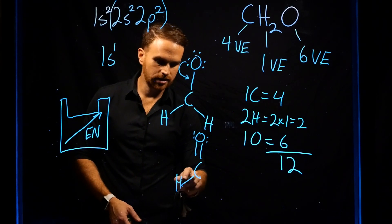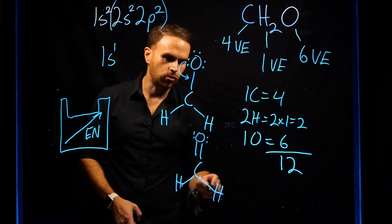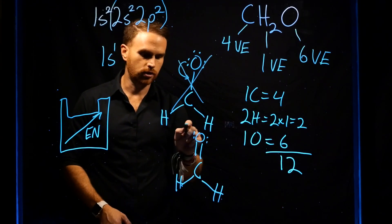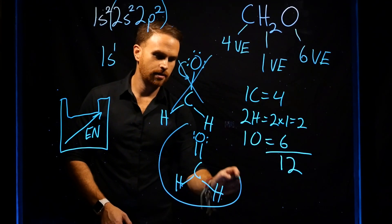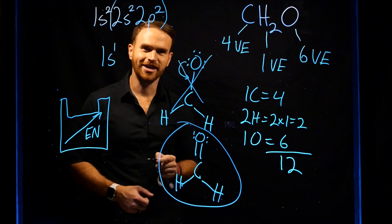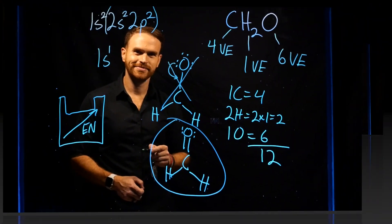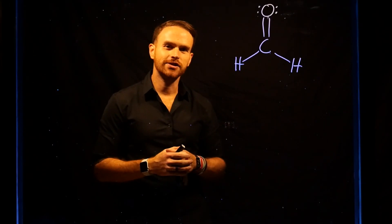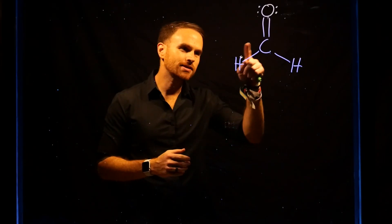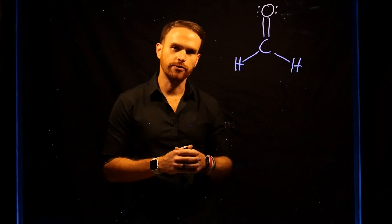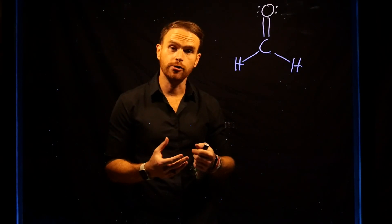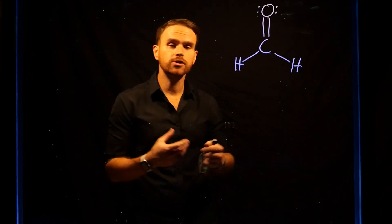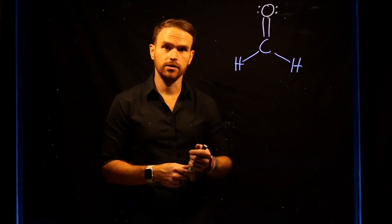This means that our final Lewis structure is going to be this. Now that we have determined the correct Lewis structure for formaldehyde or CH2O, we can do a few different things.